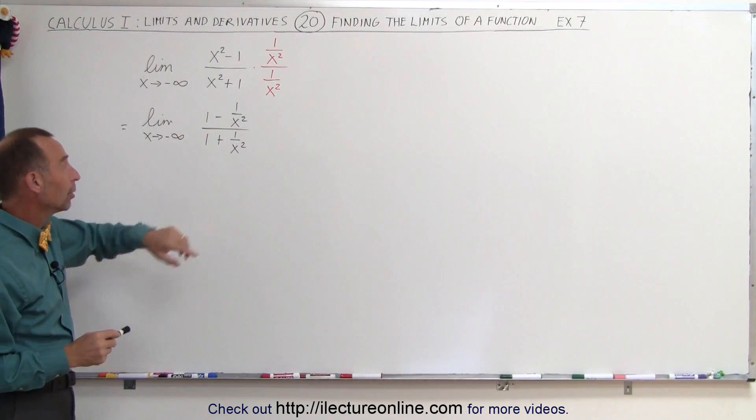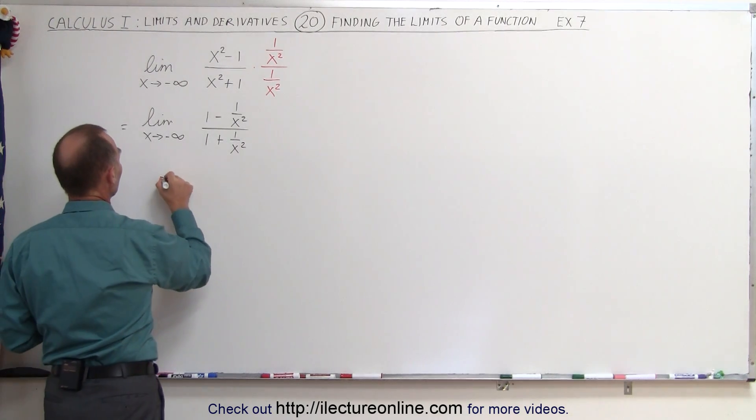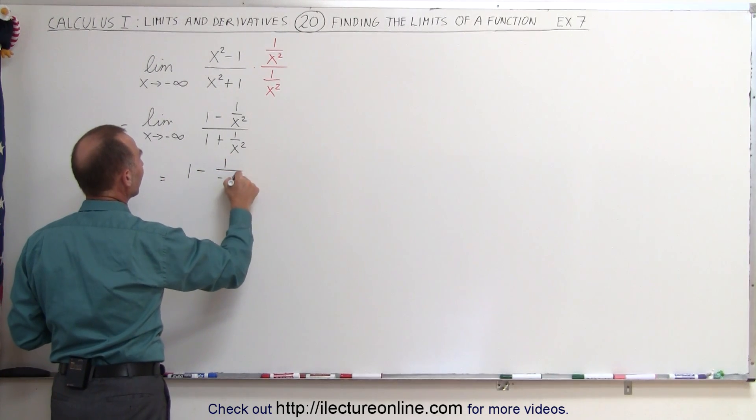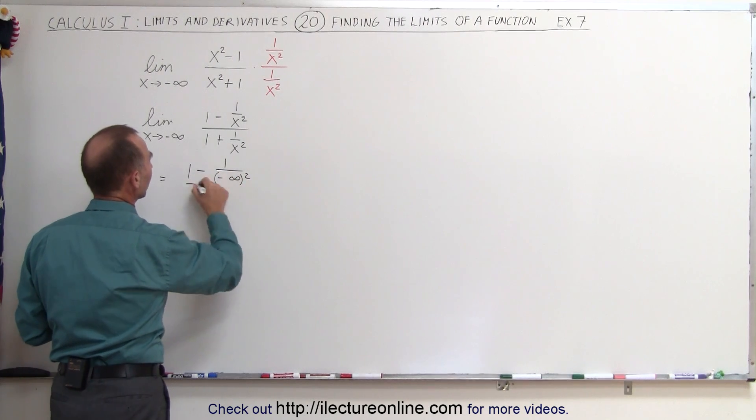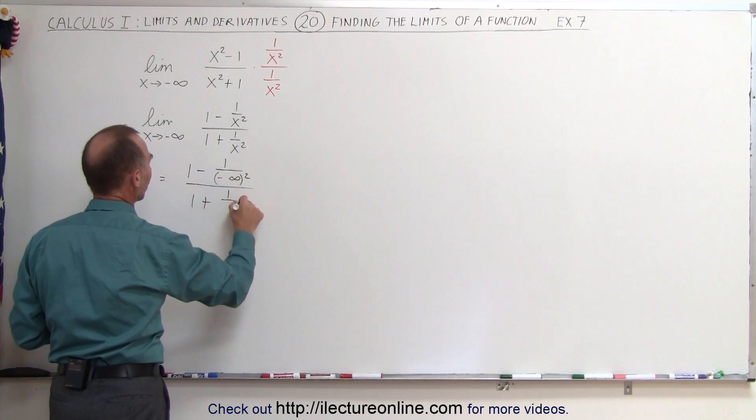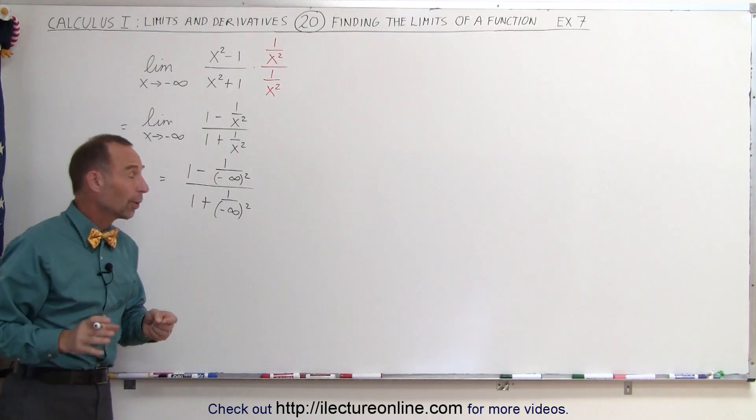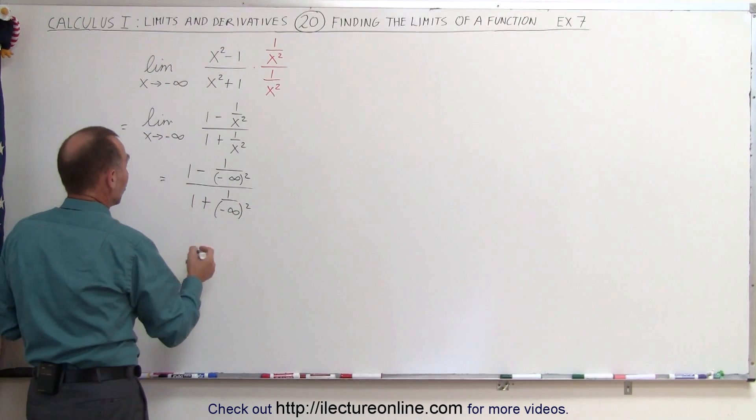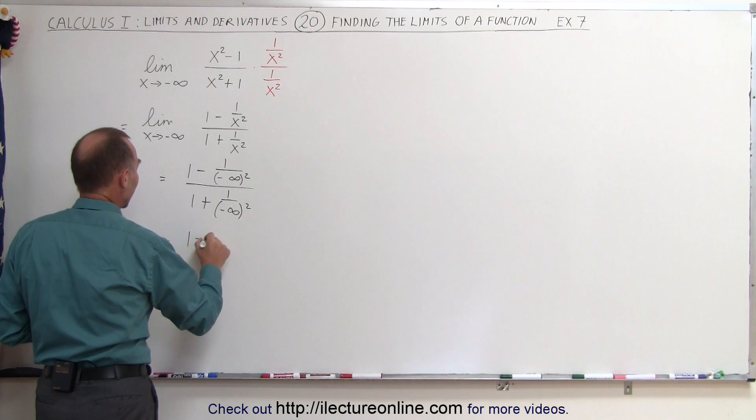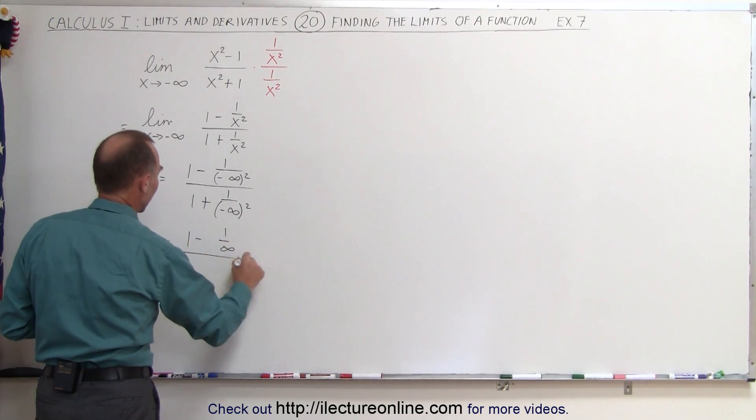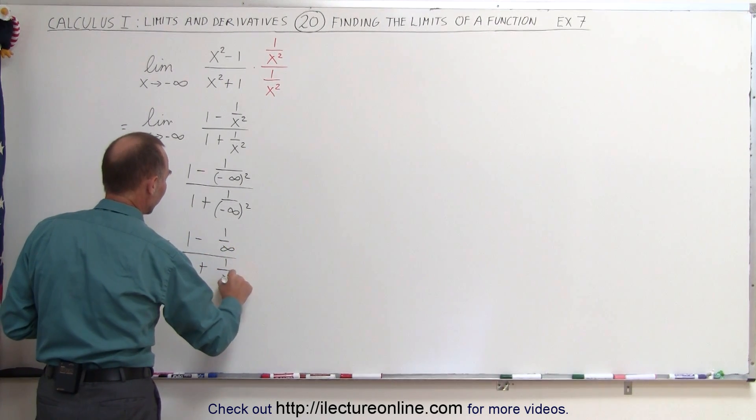But now we can plug in the limit and see what happens. So this is equal to 1 minus 1 over negative infinity quantity squared divided by 1 plus 1 over negative infinity quantity squared. So when we square that, we get, in essence, infinity squared is still infinity. So we get 1 minus 1 over infinity divided by 1 plus 1 over infinity.